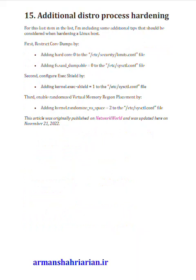Step 15: Additional distro process hardening. First, restrict core dumps by adding 'hard core 0' to /etc/security/limits.conf, and adding fs.suid_dumpable=0 to /etc/sysctl.conf. Second, configure ExecShield by adding kernel.exec-shield=1 to /etc/sysctl.conf. Third, enable randomized virtual memory region placement by adding kernel.randomize_va_space=2 to /etc/sysctl.conf. This article was originally published on Network World and updated on November 21st, 2022.